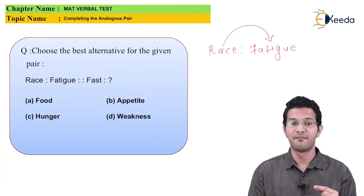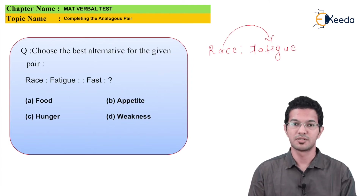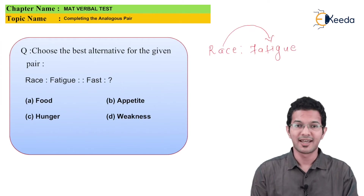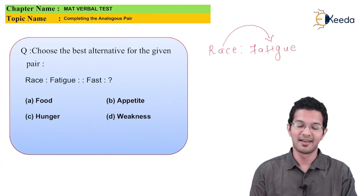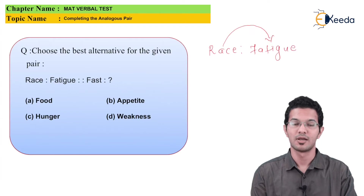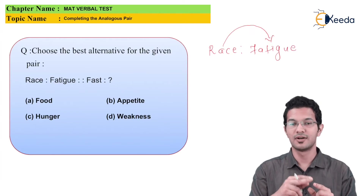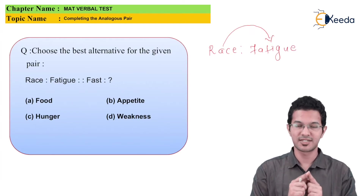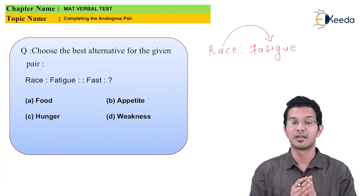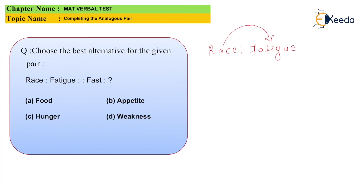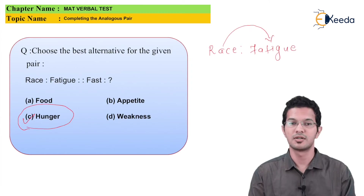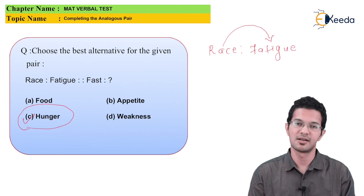The second pair: Fast is related to what? The options are: Option A - Food, Option B - Appetite, Option C - Hunger, and Option D - Weakness. When we fast, the resulting condition is hunger. So the answer to this question is Option C, which is Hunger.